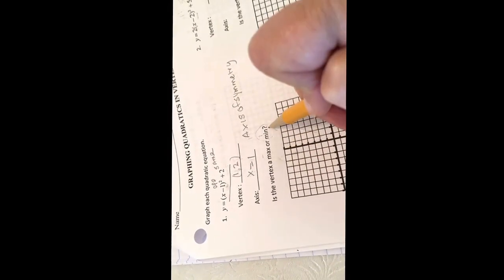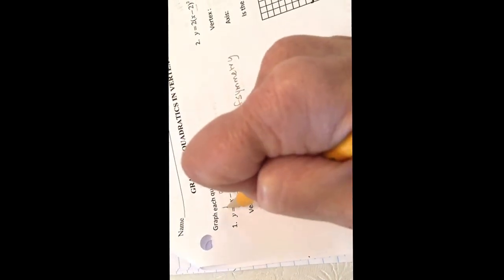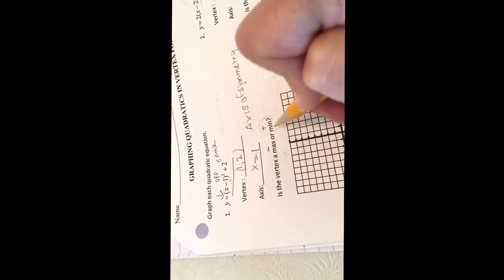Is it a max or a min? We'll look right up here in front of that parenthesis. Is it positive or negative? If it's positive, it's a minimum value. If it's negative, it's a maximum value, so we have a minimum value.